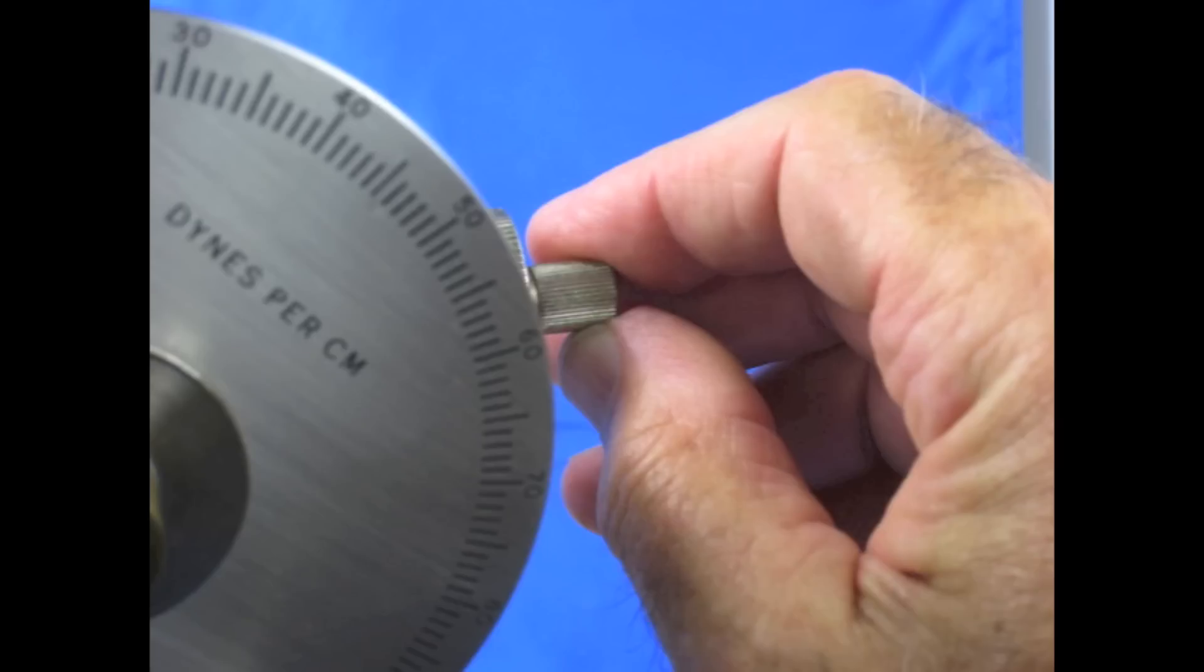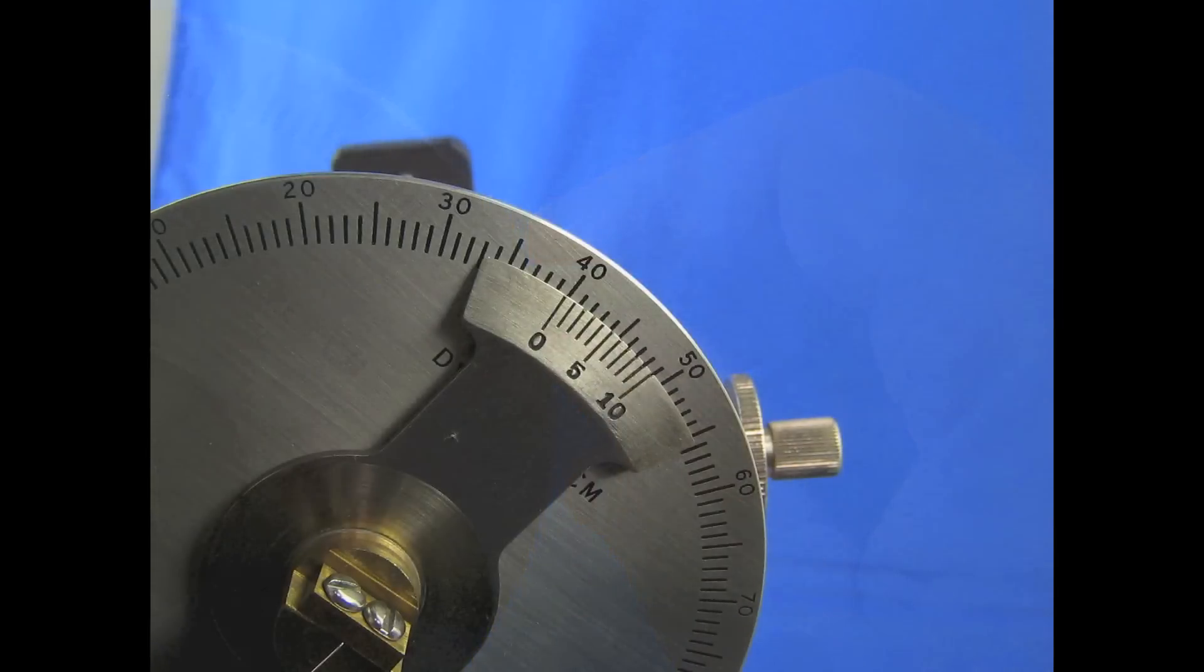Using the adjustment knob, bring the pointer to the line until the dial vernier reading is within 0.5 dynes of the calculated number.